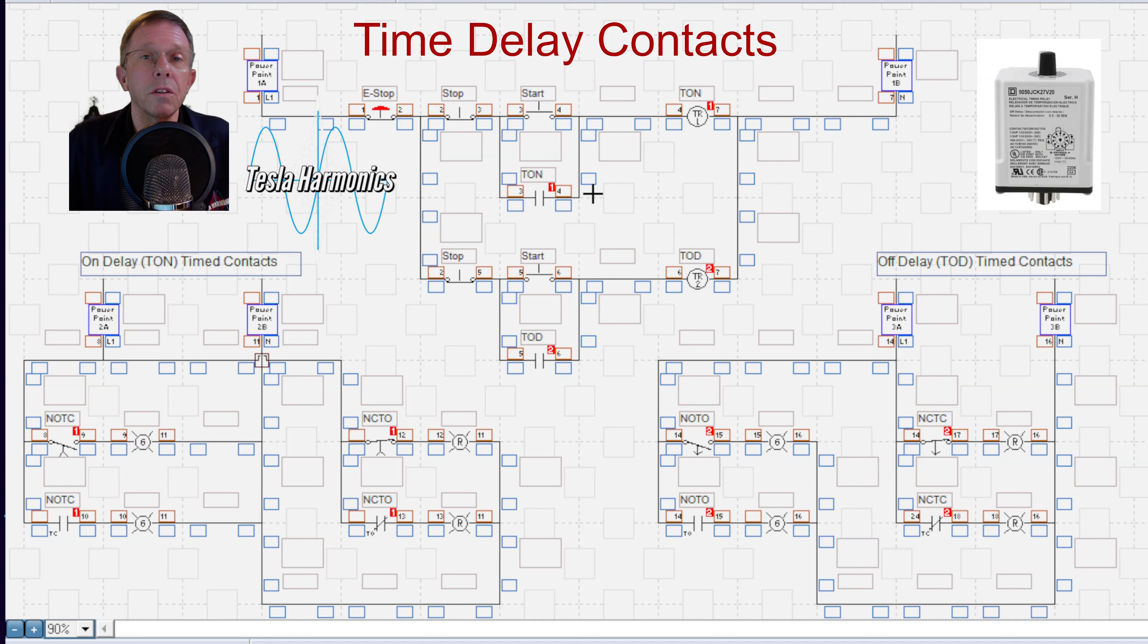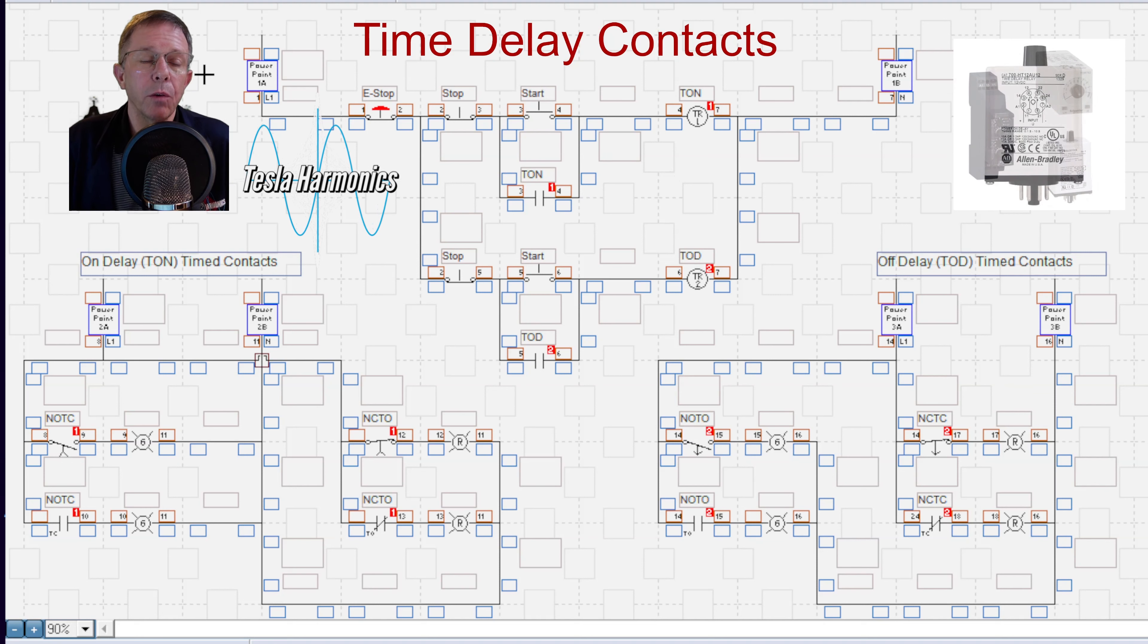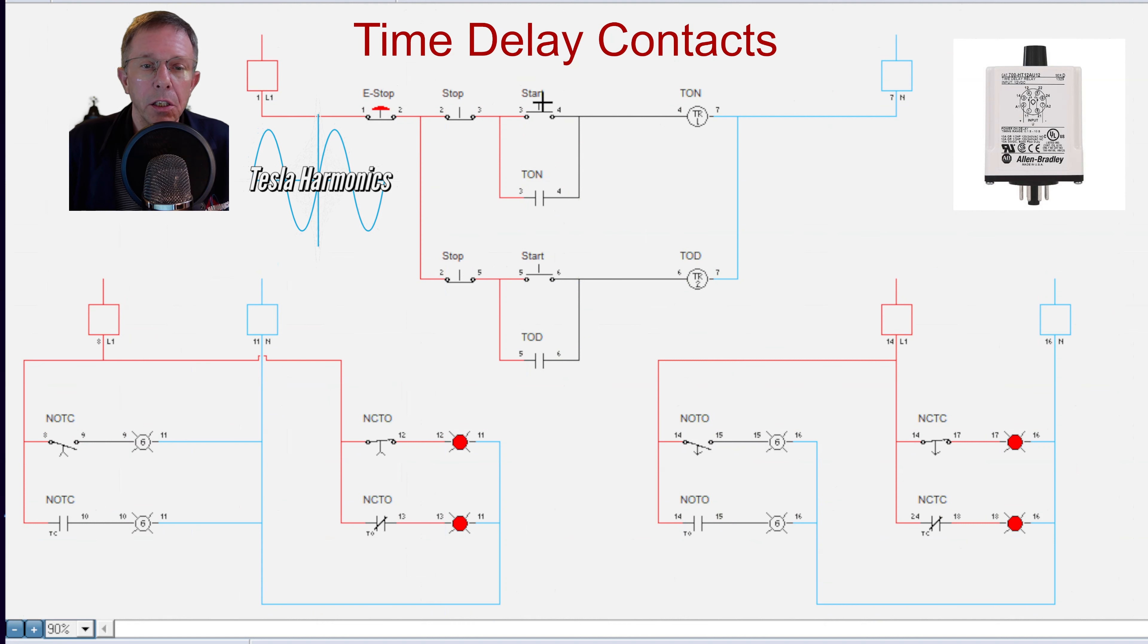Okay everyone, so looking at our time on delay circuit, if I turn on the main power and I energize this time on delay coil, it will begin to count. And after three seconds, it will change the contacts that are associated.